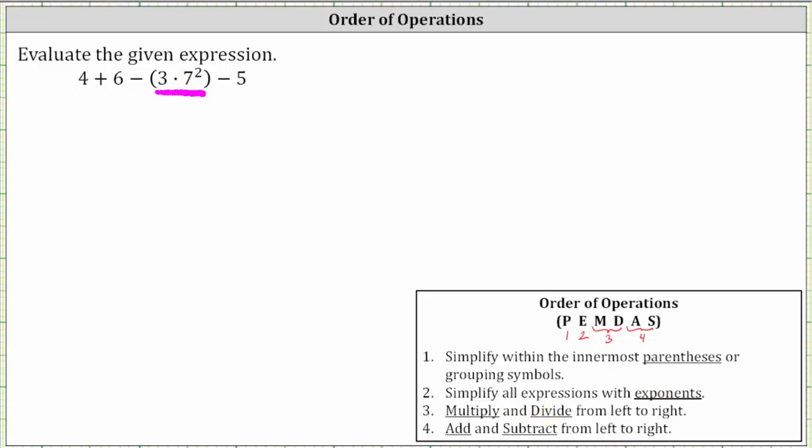Which means the first step is to simplify or evaluate seven squared. Seven squared is equal to seven times seven, which is equal to 49. The given expression simplifies to four plus six minus the product of three and 49 minus five.